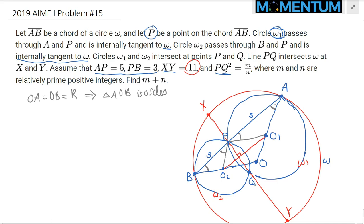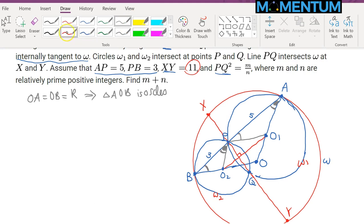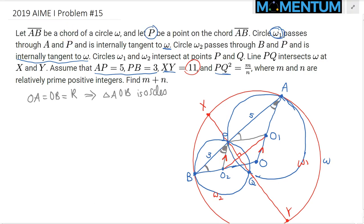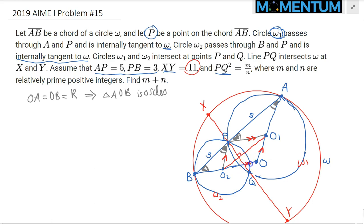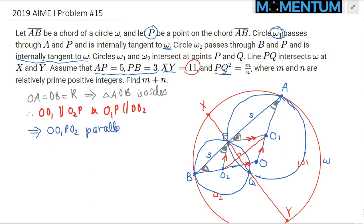What's more important is that corresponding angles suggest we have parallel lines — OO1 is parallel to O2P, and O1P is parallel to OO2. So therefore O, O1, P, O2 is a parallelogram. That's crucial.